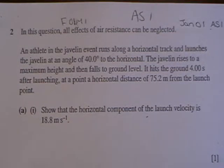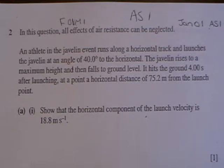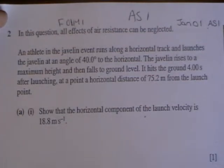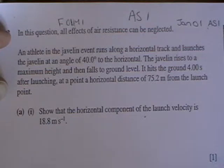An athlete in the javelin event runs along a horizontal track and launches the javelin at an angle of 40 degrees to the horizontal. The javelin rises to a maximum height and then falls to ground level. It hits the ground 4 seconds after launching at a horizontal distance of 75.2 metres.